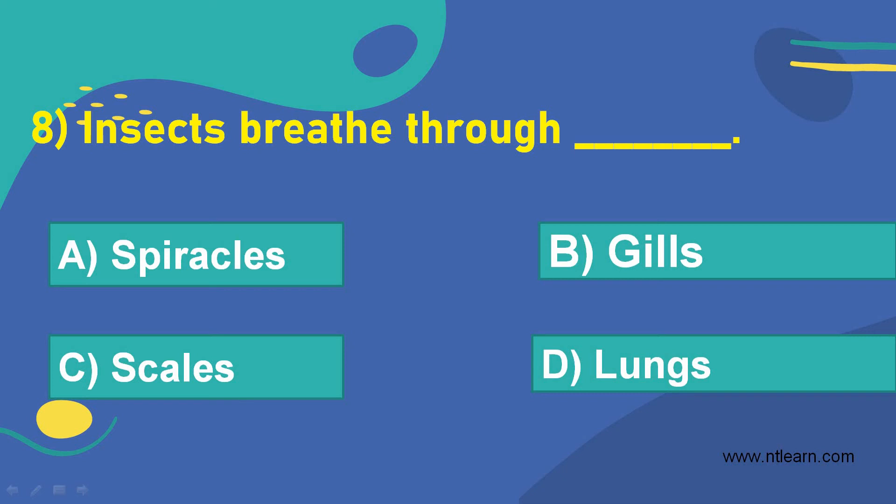Insects breathe through blank. Option A: spiracles. Option B: gills. Option C: scales. Option D: leaves.